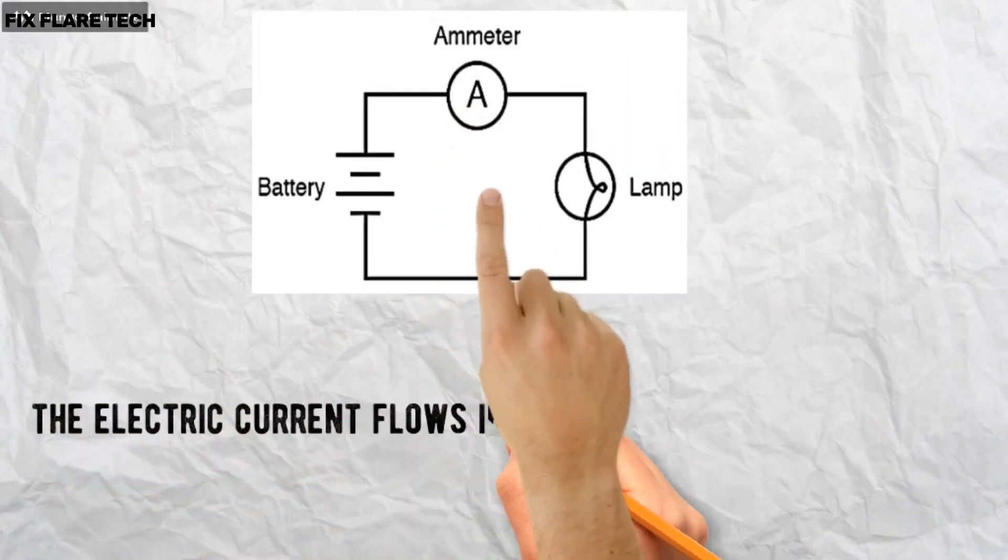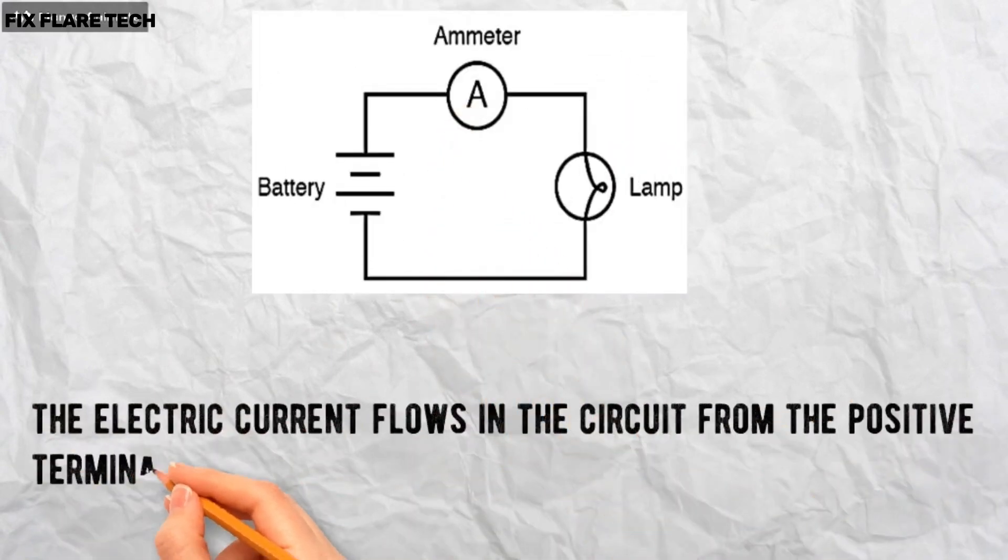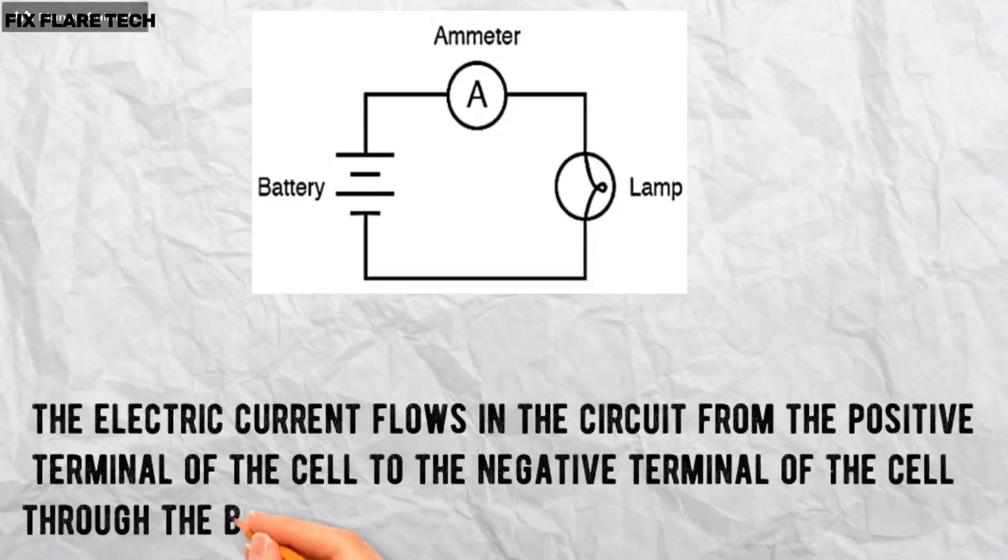Note that the electric current flows in the circuit from the positive terminal of the cell to the negative terminal of the cell through the bulb and ammeter.